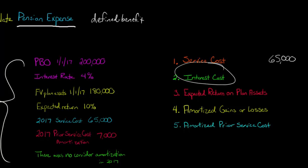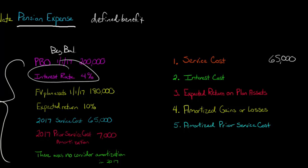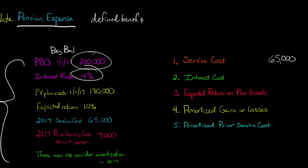The interest cost is the second component of pension expense. We take the beginning balance of the PBO — the projected benefit obligation — as of January 1, 2017, which is $200,000, and multiply it by the interest rate of 4%. This has to be the same rate used to compute the service cost. So $200,000 times 4% gives us $8,000 in interest, and both service cost and interest cost increase our pension expense.